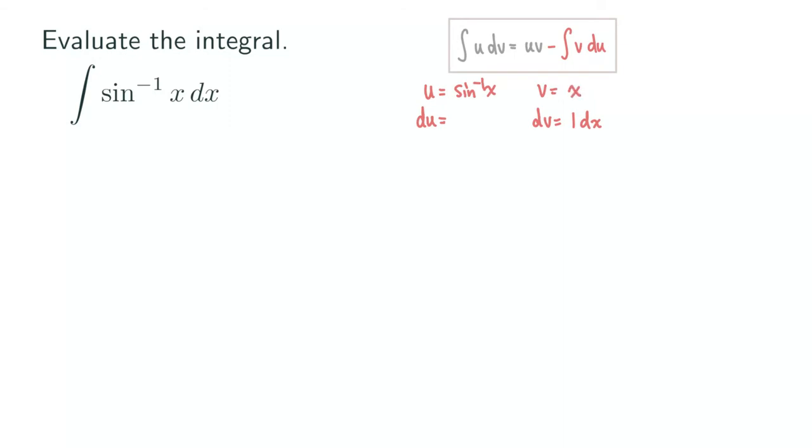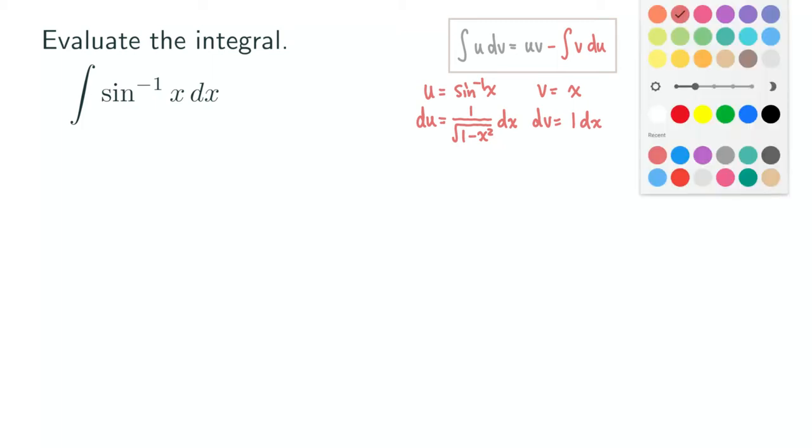And then that means we got to choose our dv to be 1 times dx. And so integrating the dv would actually be easy. We just get x right here for the v. What is the derivative of sine inverse of x? If you remember, that's actually just 1 over the square root of 1 minus x square, and then dx. So that's the table and we have that set up already.